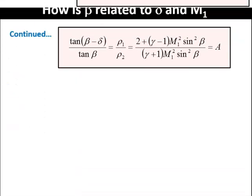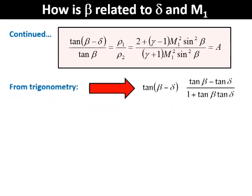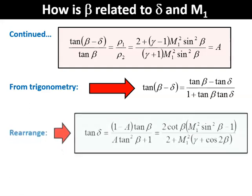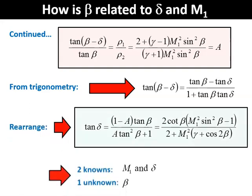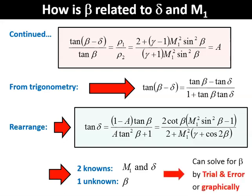But we need to expand the equation A, specifically the term tangent beta minus delta. Using trigonometry, we can split this term into tangent beta minus tangent delta divided by 1 plus tangent beta times tangent delta. Then, we can substitute this back into the top equation labeled A. That rearrangement will give you this equation, where beta is the only unknown parameter, and the two known parameters are M1 and delta. Since the unknown parameter is in the right side of the equation, and cannot be explicitly extracted in terms of the other unknown parameters, we cannot solve this equation directly. But this equation can still be solved either by trial and error, or by using a graphical approach.